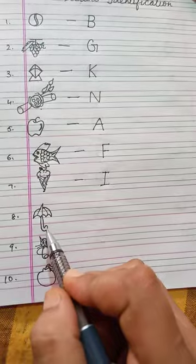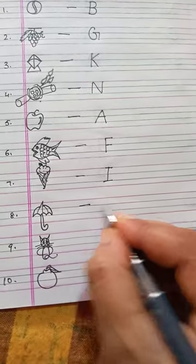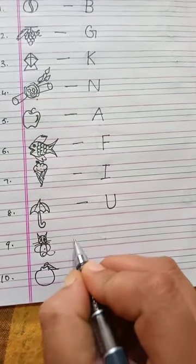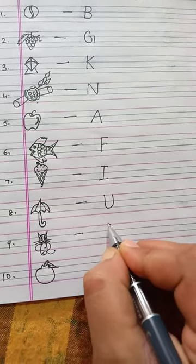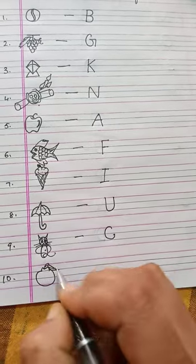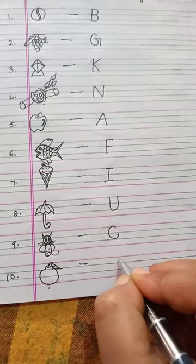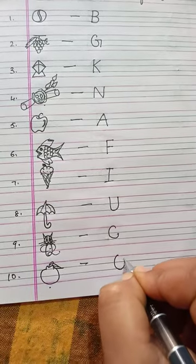U for umbrella. C for cat. And the next picture is O for orange.